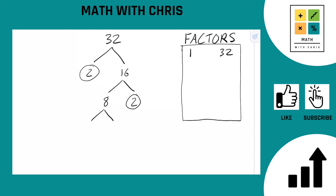8 is 4 times 2. 2 is a prime number, so that one's done. But 4 is not — we've got to break that one down further. 4 is 2 times 2. Both 2s are prime numbers. And now every branch of the tree ends in a circled prime number no matter where you go.